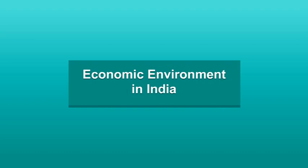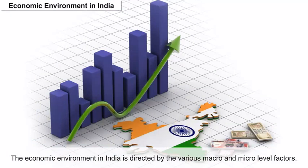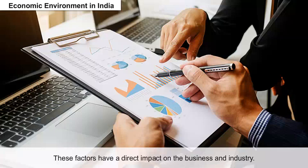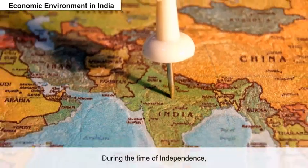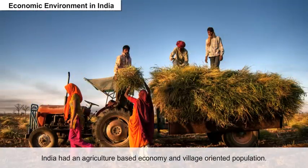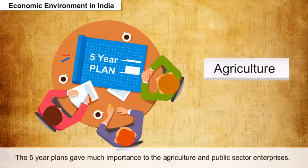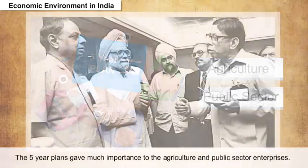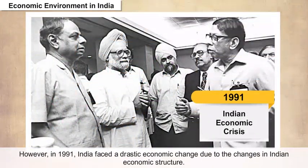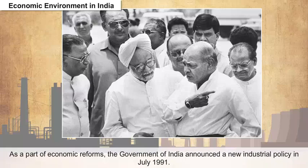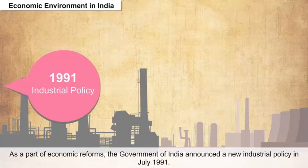Economic Environment in India: The economic environment in India is directed by various macro and micro level factors, which have a direct impact on business and industry. During the time of independence, India had an agriculture-based economy and village-oriented population. The five-year plans gave much importance to agriculture and public sector enterprises. However, in 1991, India faced a drastic economic change due to changes in the Indian economic structure. As part of economic reforms, the government of India announced a new industrial policy in July 1991.